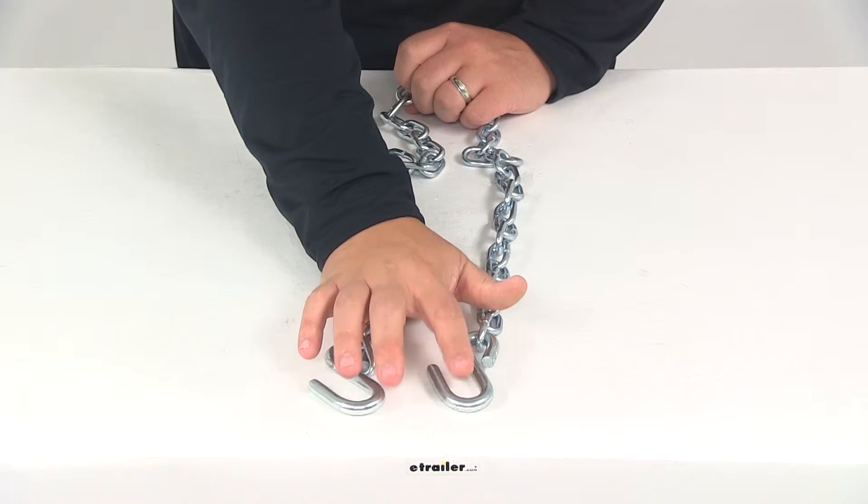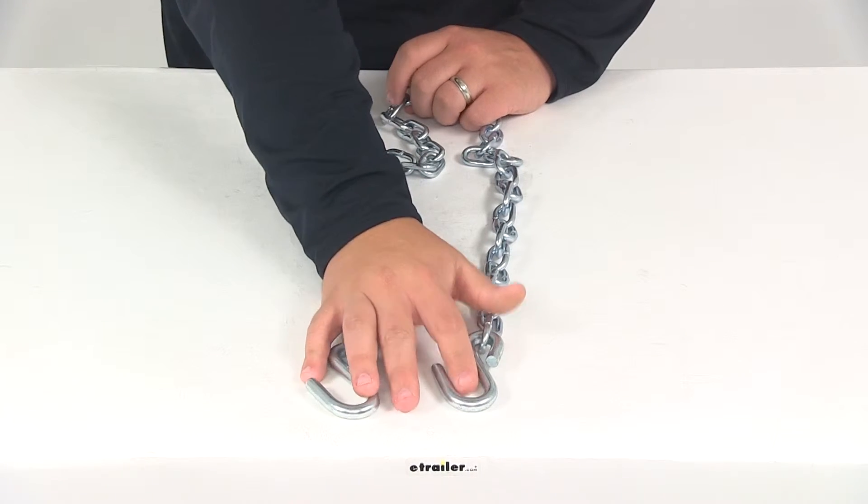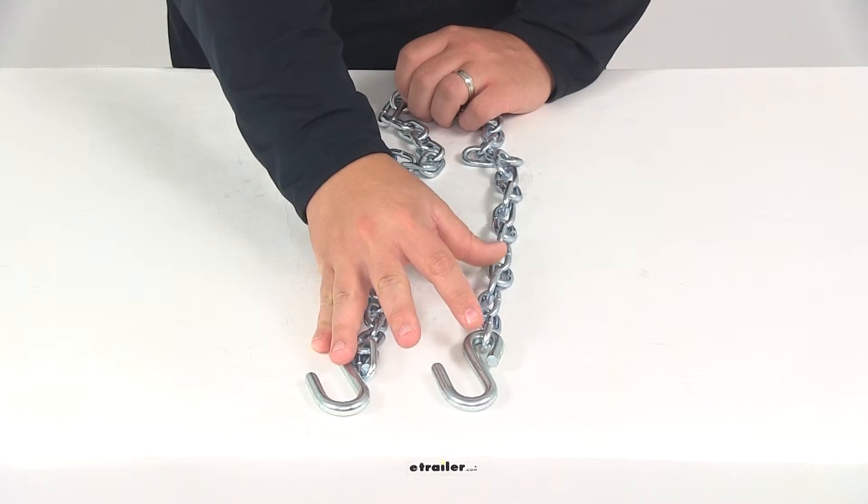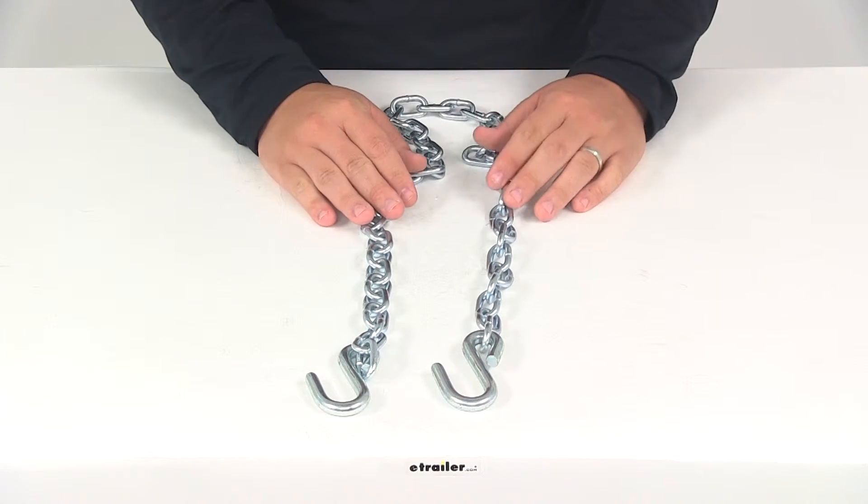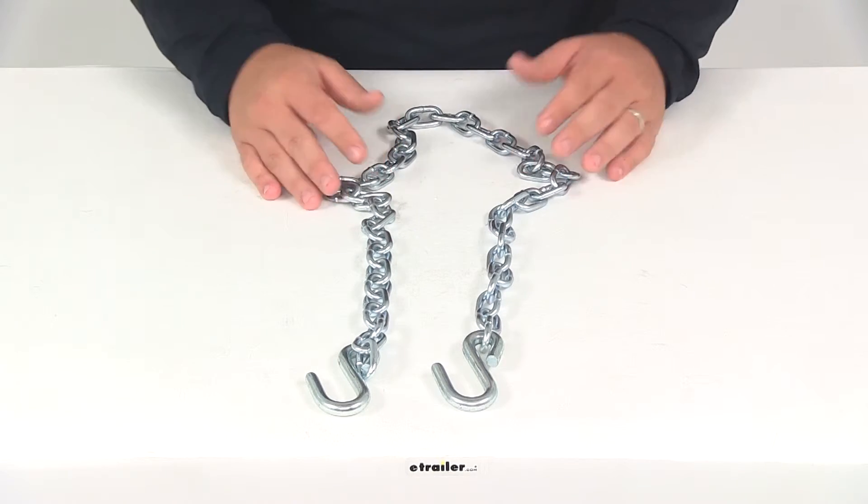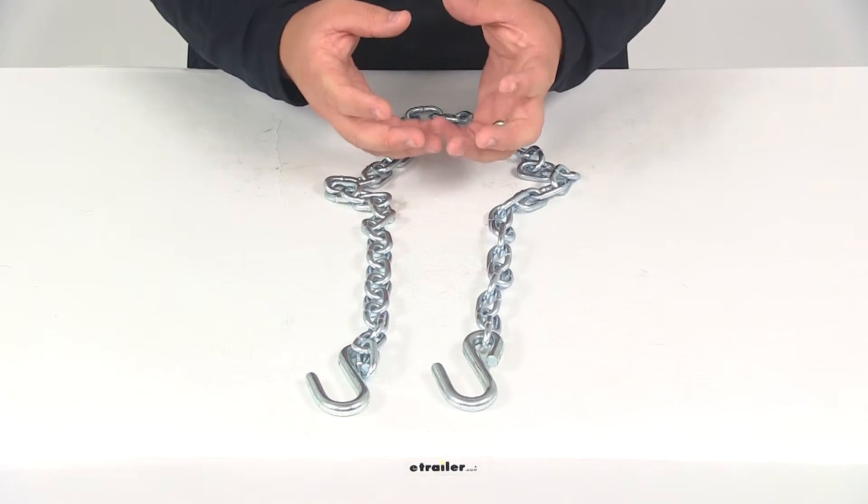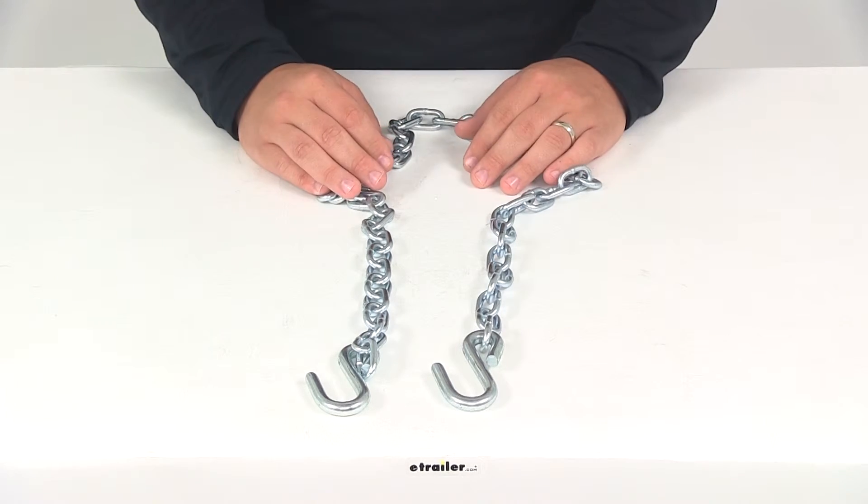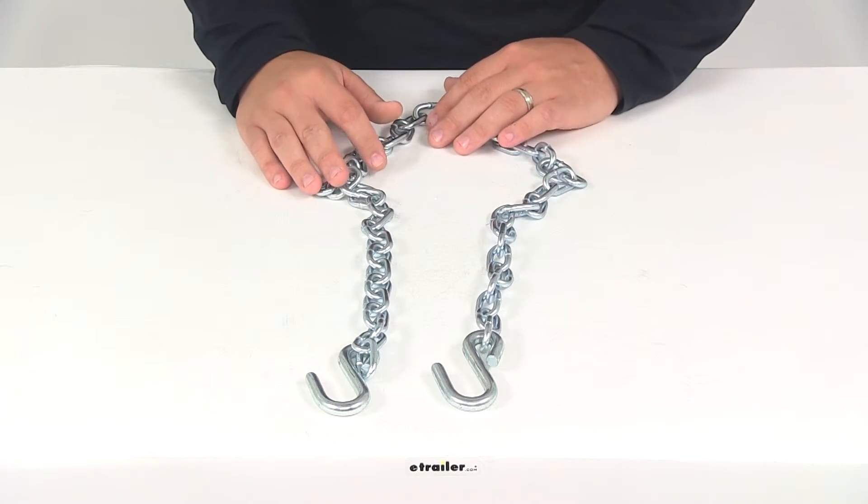The hooks are then going to attach to the safety chain loops on your vehicle's hitch. We do recommend that you cross the chains under the coupler, and that's going to keep the coupler from dragging if the trailer were to come disconnected from the hitch ball. The chains would create a cradle and catch that coupler if it ever came off.